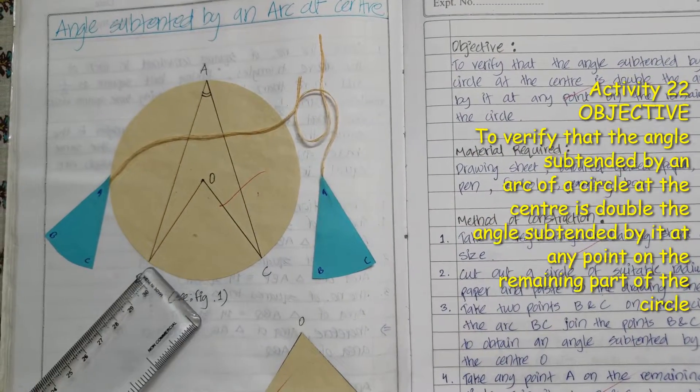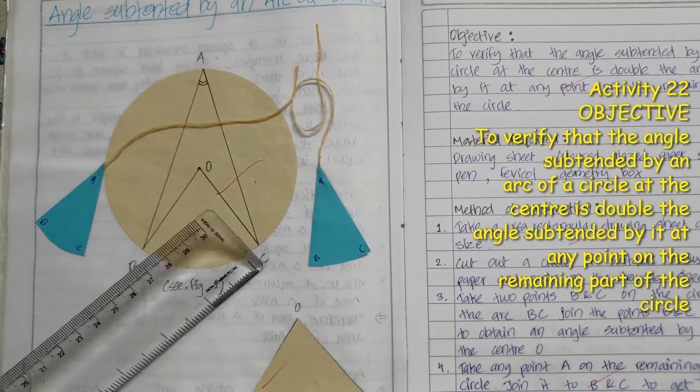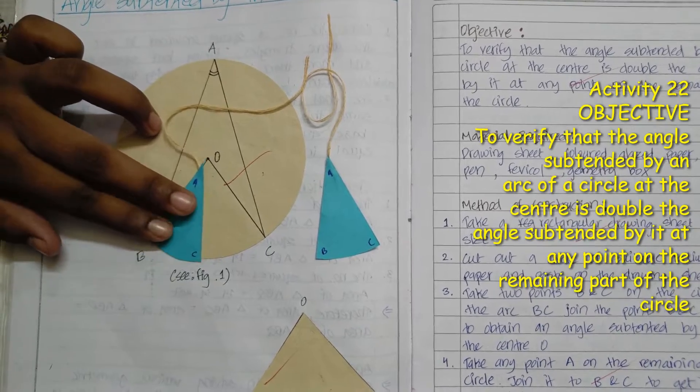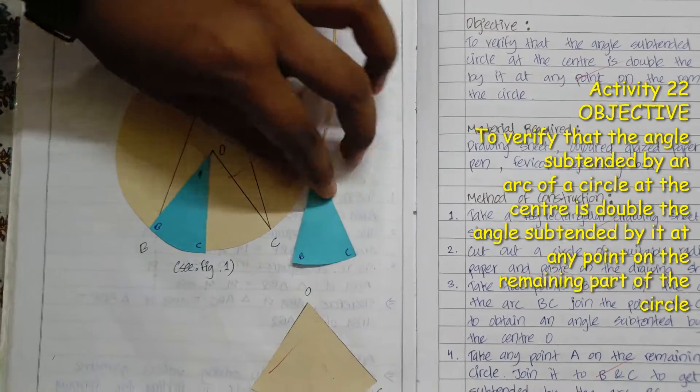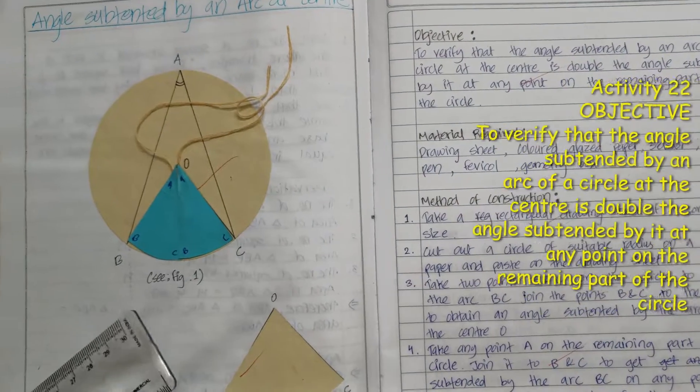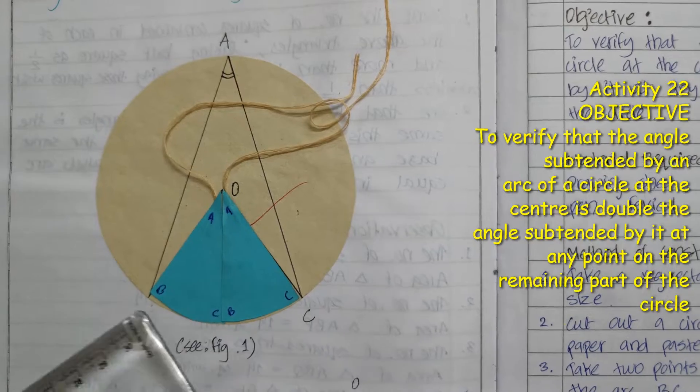The angle subtended by the arc BC at center O is BOC. Now we will put the angle BAC 1 and then BAC 2. Here we can see that angle BOC is twice of the angle BAC.